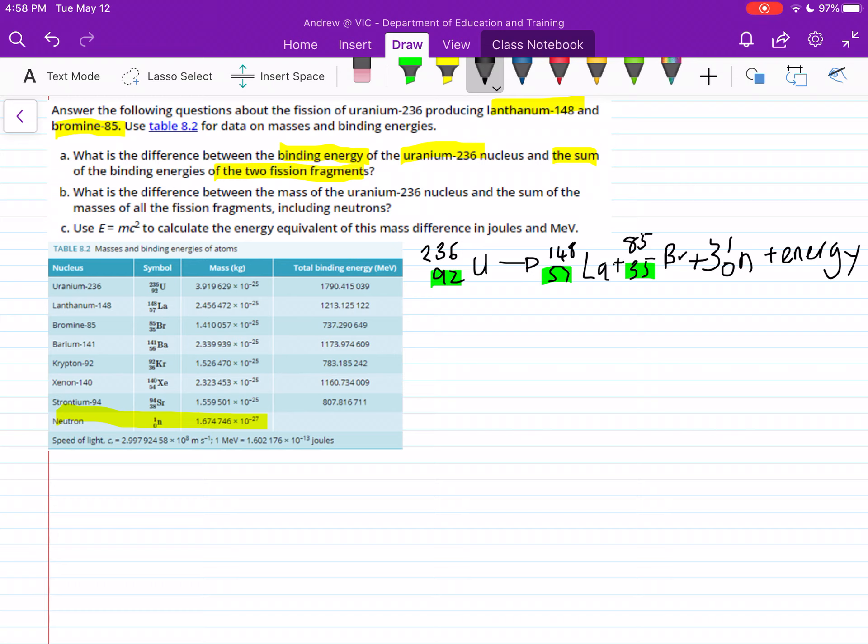Now we just need to find the binding energy of uranium, and then compare that to the binding energy of lanthanum and bromine added together. I'm just going to use BE for binding energy of uranium, and this is stated in our table. So uranium, binding energy here, we just need to write that value out.